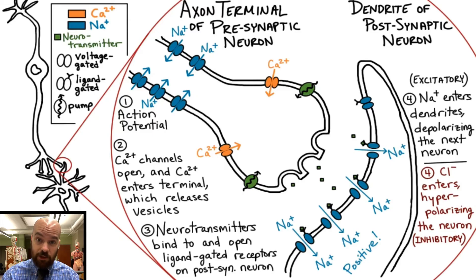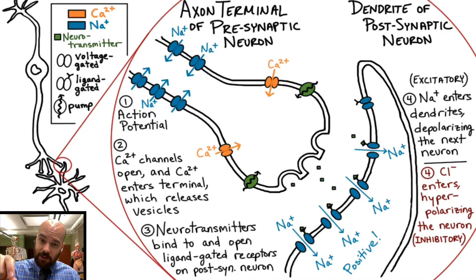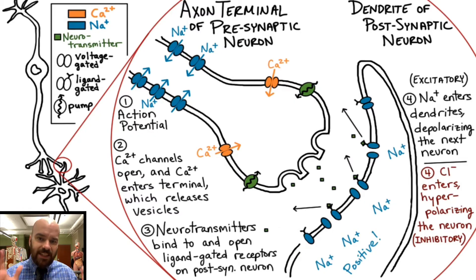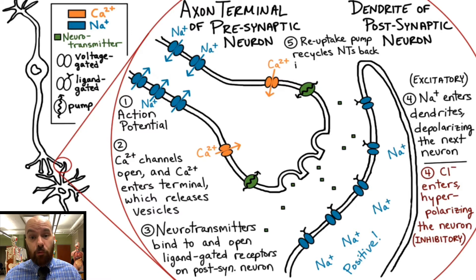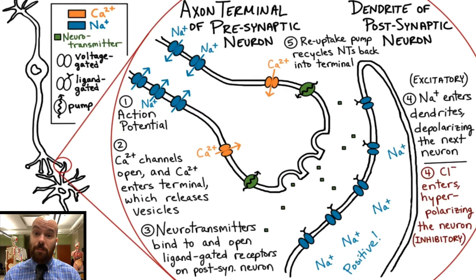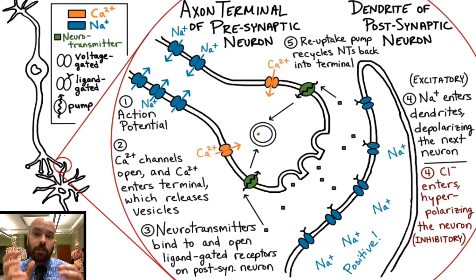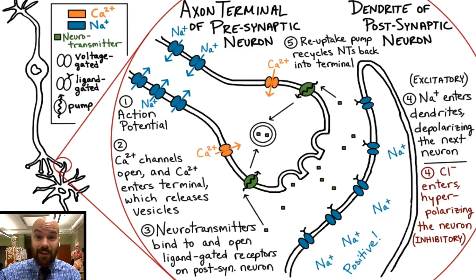Those postsynaptic channels won't stay open forever. The neurotransmitters will bind for a little while and then leave and start to diffuse away. The last step is our bodies being efficient with resources — we don't want these neurotransmitters to go to waste. So while some of them will diffuse away from the synapse, a lot of them will be recycled or reuptaken into the presynaptic cell. This is accomplished by the reuptake pump, which pumps the neurotransmitter back into the axon terminal where it gets repackaged in a vesicle, ready to be released again the next time an action potential happens.